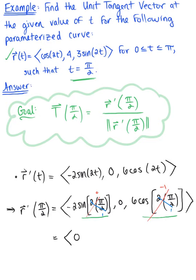This leaves us with the simplified vector. -2 times 0 is 0, and we have 0. -1 times 6 is -6. So here is the tangent vector evaluated at π/2.